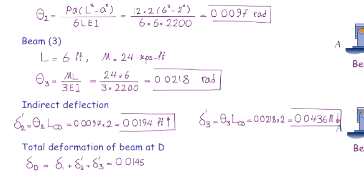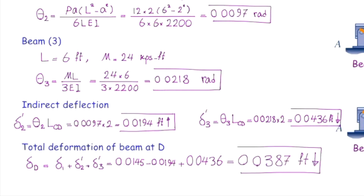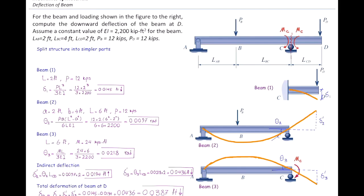Assuming downward is positive: delta one is +0.0145, delta prime two goes upward so it is −0.0194, and delta prime three goes downward so it is +0.0436. The overall deflection of the beam at point D is 0.0387 feet. Now let's talk about how we can solve these kinds of problems in general.